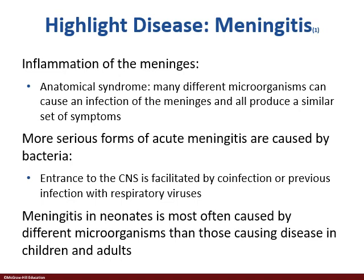In Chapter 16, I told you and pointed out every chance I could that the appearance of the rash — what does it look like, pustules, vesicles — and where it's located, where does it start, where does it spread to, is clinically indicative of what disease you're talking about. With meningitis, presentation is going to look the same no matter what, but what we see here is an age difference.